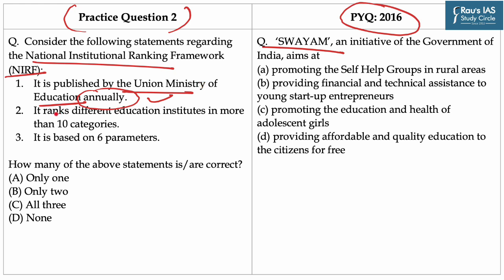Statement number 2: It ranks different educational institutes in more than 10 categories. This statement is also correct because NIRF ranks different educational institutions in 13 categories. These include Engineering, Management, Pharmacy, Law, Medical, Dental, Architecture and Planning, Agriculture and Allied Sectors, Colleges, Universities, Research, Innovation, and the 13th category of Overall.